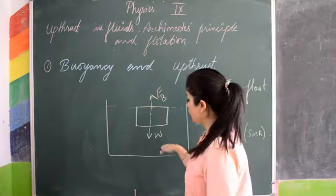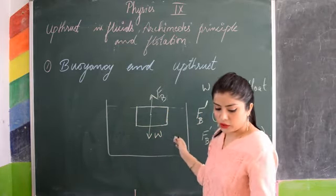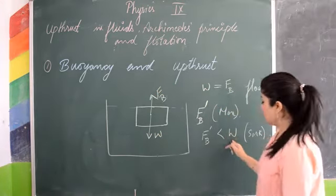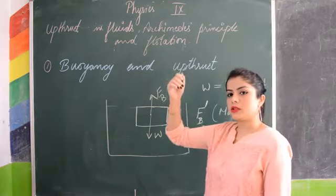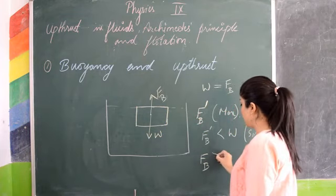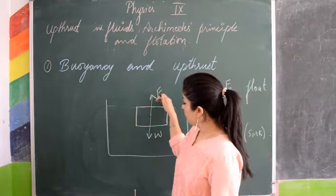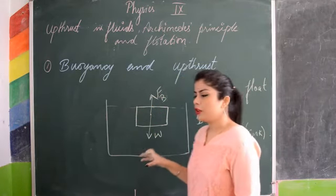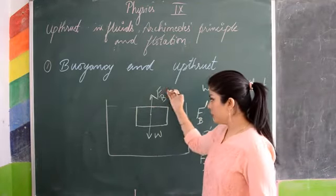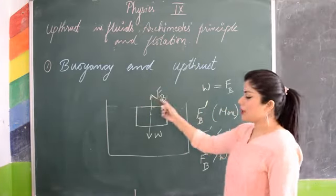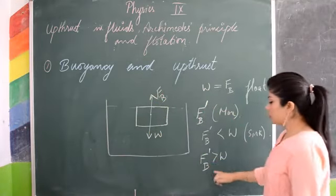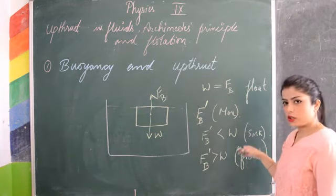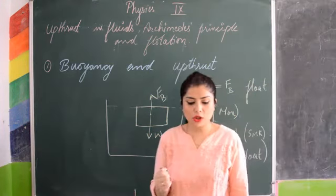If the upthrust is more than the gravitational force — suppose you put an object in water and its weight is very less, like an empty can with only a few grams of weight — then the upthrust of the water, the maximum upthrust FB', will not let the object sink. So the object will float. These are the three conditions you need to remember: at which point the object will float and at which point the object will sink.